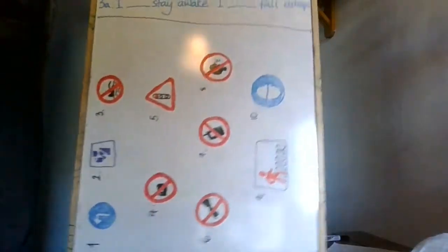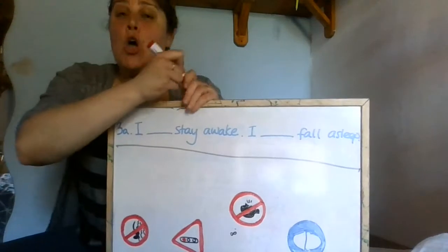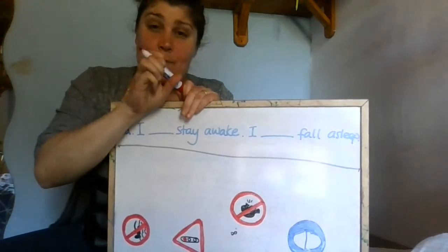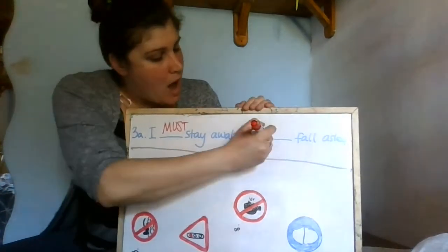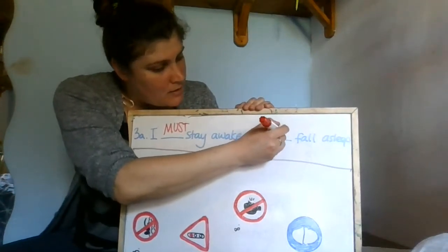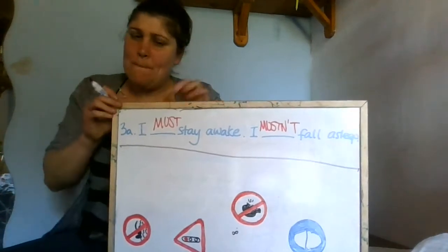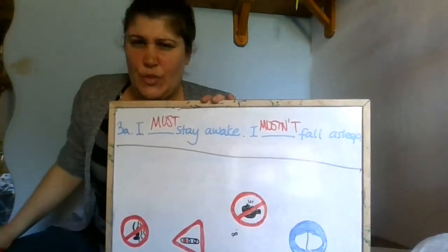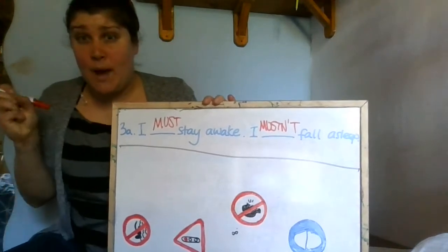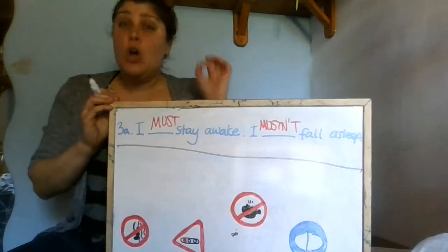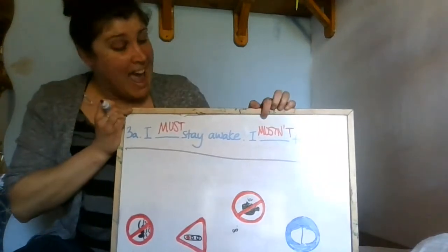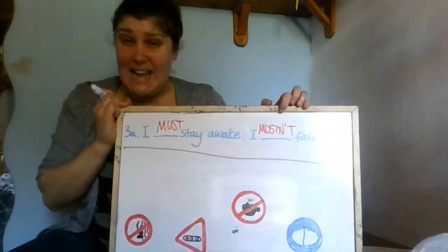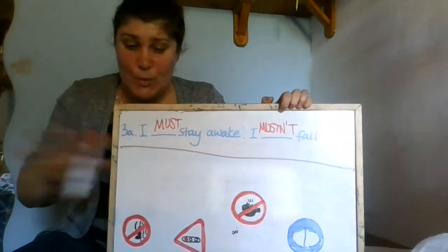Alright, let's have a look. Can you see the sentence? Good. Let's complete it then. 'I must stay awake. I mustn't fall asleep.' So, must and mustn't. What do you think they mean? 'I must stay awake. I mustn't fall asleep.' 'I must' is an obligation — it's really important. I must stay awake.